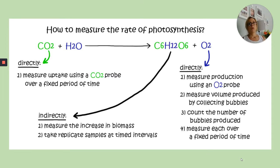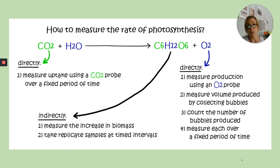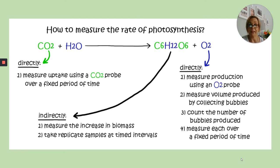The required practical is all about measuring the rates of photosynthesis, and we can do that in a number of ways. An indirect method would be to measure changes in biomass, because as a plant photosynthesises it uses glucose as energy to grow new cells and to create other biological molecules it needs — such as proteins, complex carbohydrates, and lipids — all of which increase its biomass. You can record that more accurately by weighing seedlings after a given amount of time to see how much they've increased in mass.